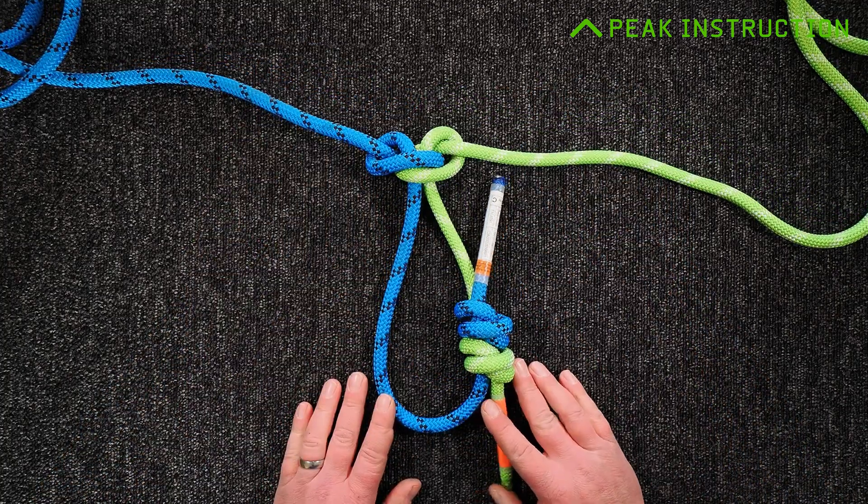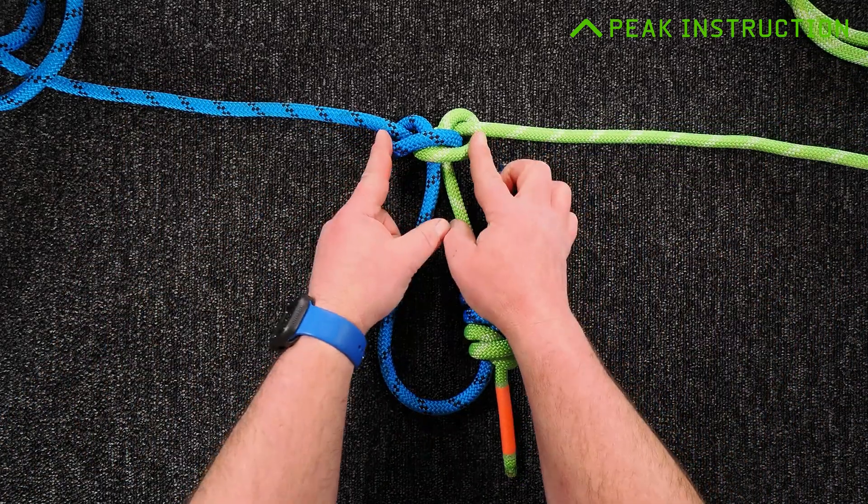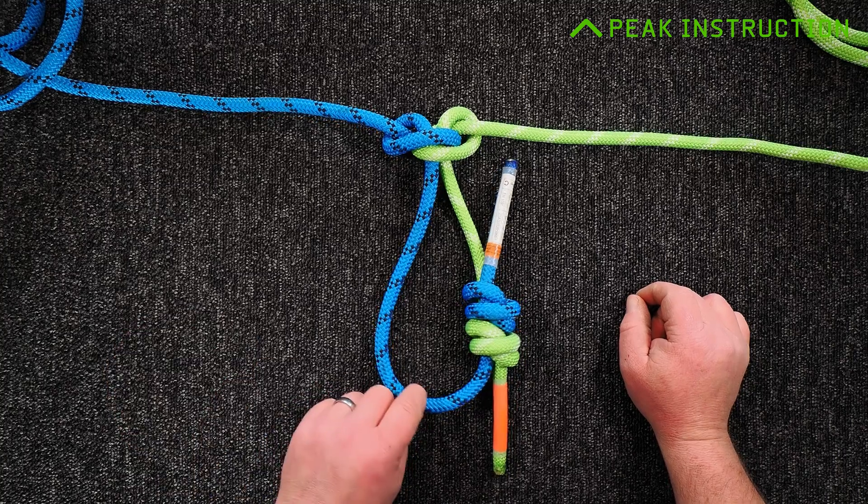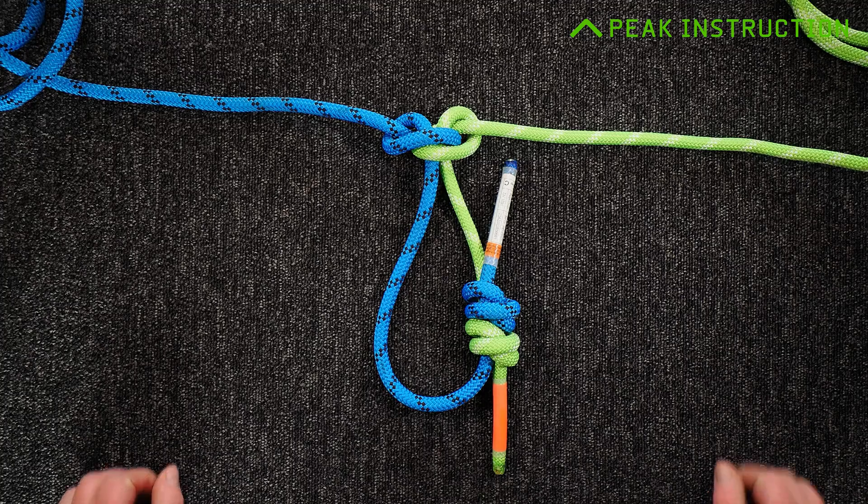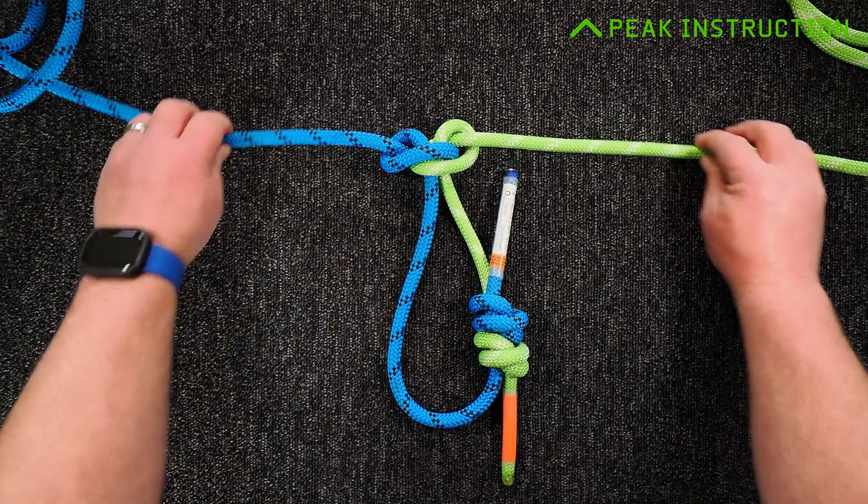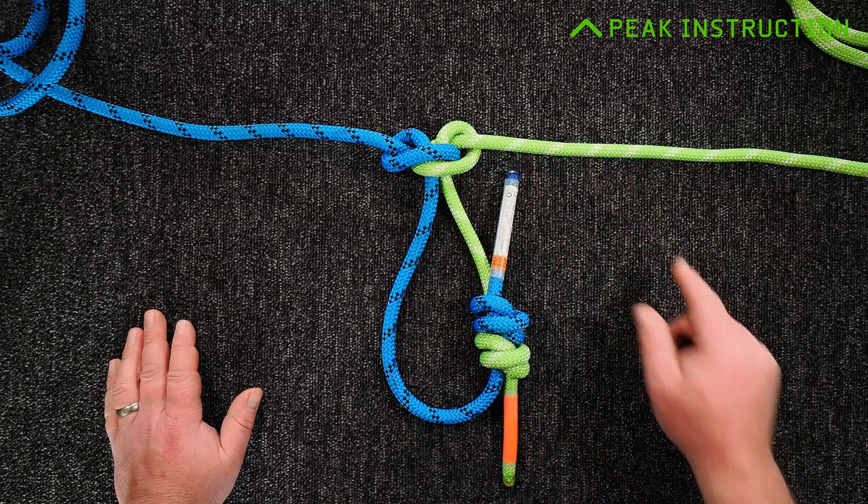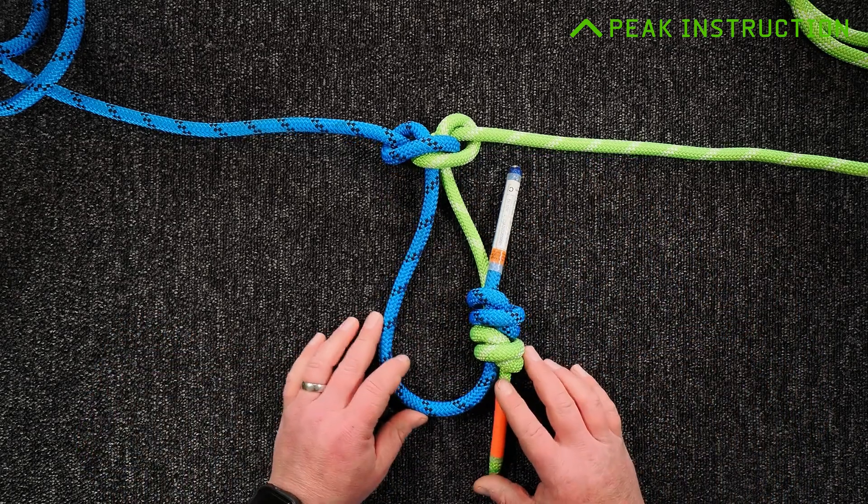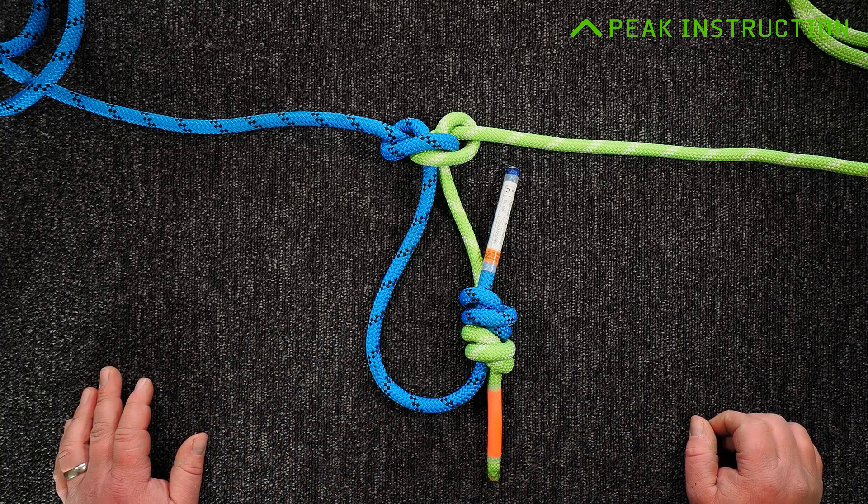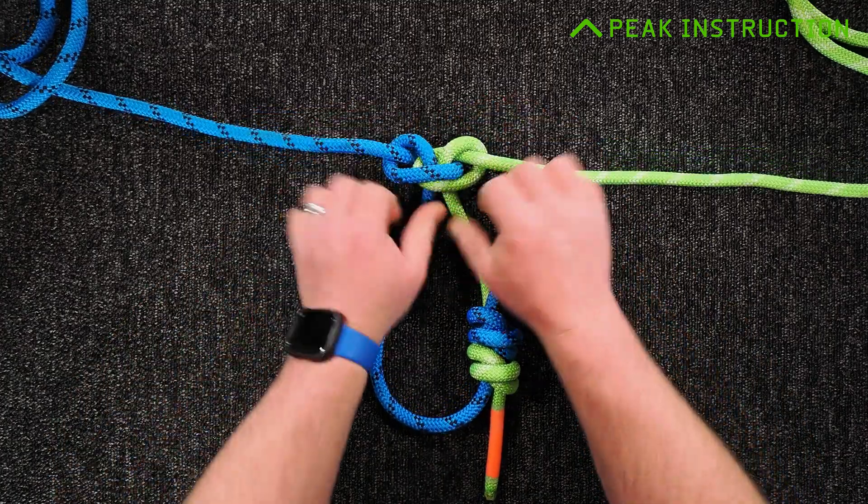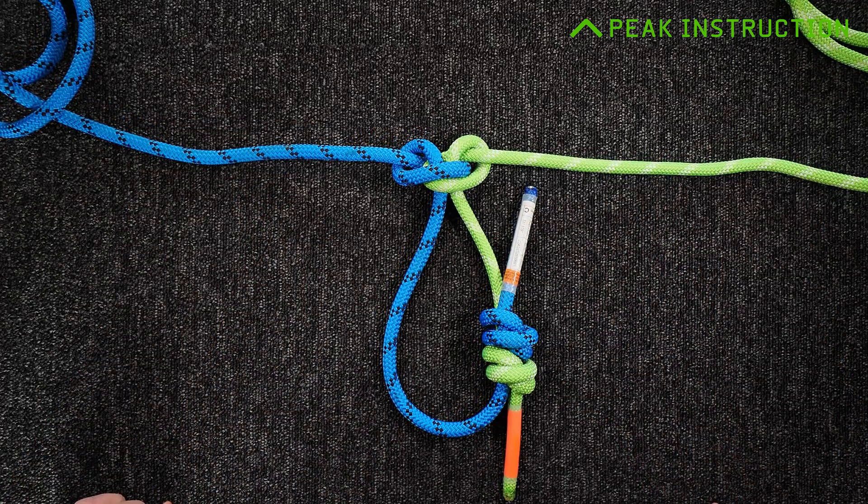The best thing about this join is it's a small profile to pass with your ascenders, and you've got a really nice secure bomb proof loop there to clip the cow's tail into to protect you while you're doing that maneuver. As ever, make sure you practice rigging techniques like this and the actual SRT maneuvers in a safe and controlled environment, ideally with someone who can sort you out if something goes wrong. But yeah, this is my personal favorite way of joining ropes for SRT pitches if I need to.